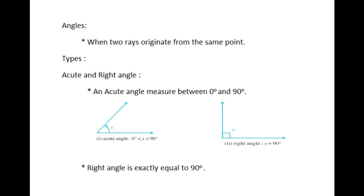Next we will see about angles. When two rays emanate from the same point, then it is called an angle. The rays making an angle are called the arms of the angle and the end point is called the vertex of the angle.